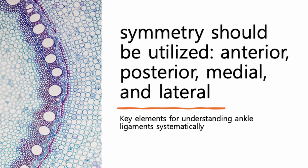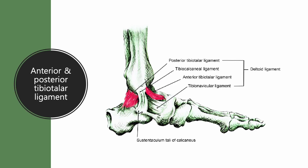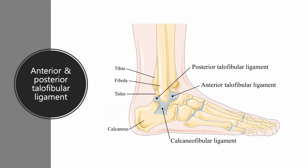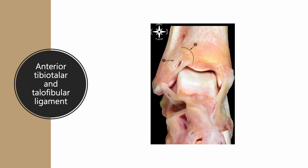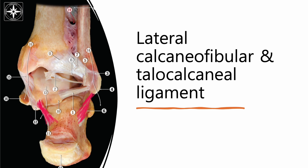Third, symmetry should be utilized: anterior, posterior, medial, and lateral. For instance, the anterior and posterior relation relates to the anterior and posterior inferior tibiofibular ligament, the anterior and posterior tibiotalar ligament, and the anterior and posterior talofibular ligament. By changing fibula to tibia, you catch symmetric relationships, such as changing the anterior talofibular ligament to the anterior tibiotalar ligament, the posterior talofibular ligament to the posterior tibiotalar ligament, and the lateral calcaneofibular ligament to a talocalcaneal ligament.